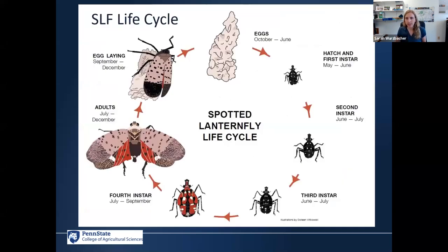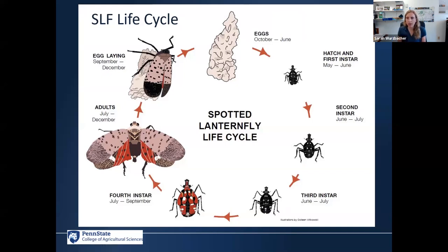Let's dig into the life cycle of this insect. The most important thing to remember is that it's one generation per year — we don't have overwintering adults. Instead, the adults focus on laying eggs starting around this time of year and into December. Egg masses overwinter and hatch out. Individuals move through life stages called instar nymphs — they look like little leaf hoppers, black with little white spots, and get larger as they molt. The fourth instar is very showy with red and yellow coloration. Finally it advances into adulthood, can fly, and commences egg laying.